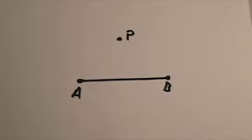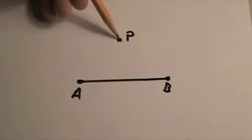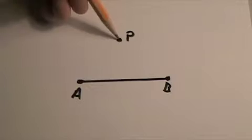I'll show you how to construct a line perpendicular to a given line through a given point not on the line. I've got line segment AB with point P above line segment AB.